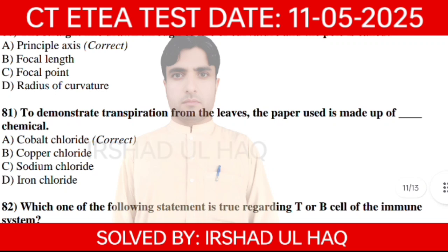Question 81. To demonstrate transpiration from the leaves, the paper used is made up of cobalt chloride. Option A: Cobalt chloride. A is the correct option.